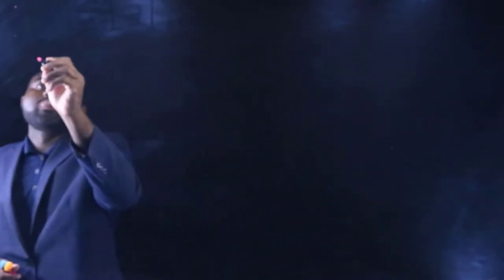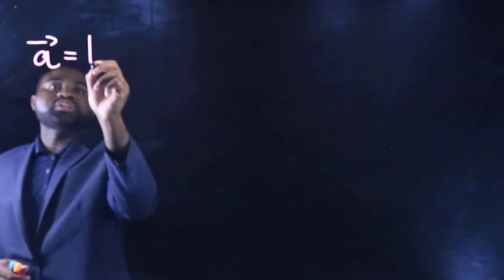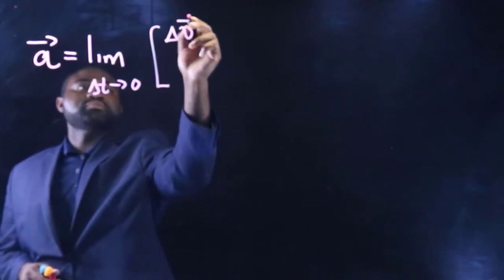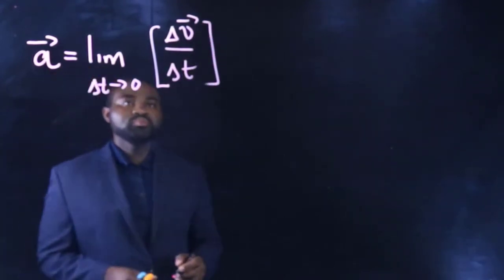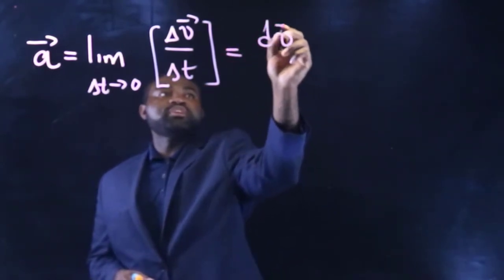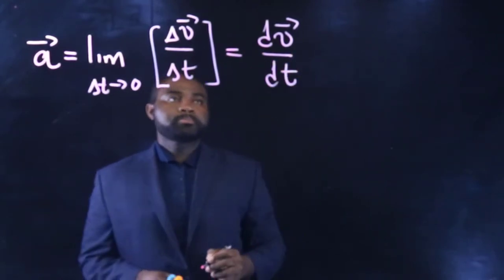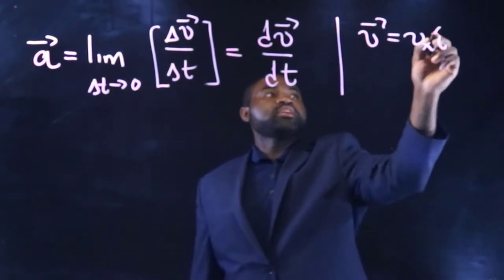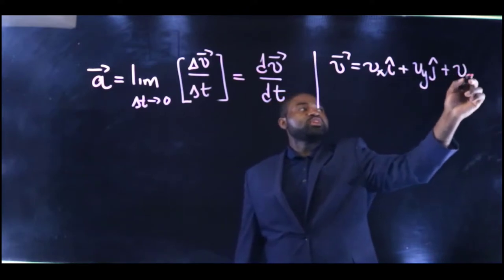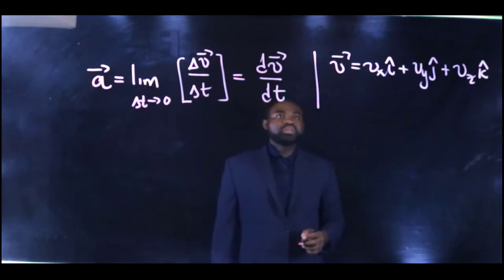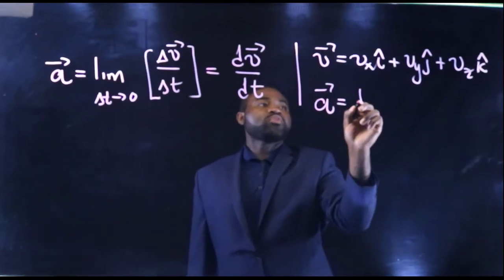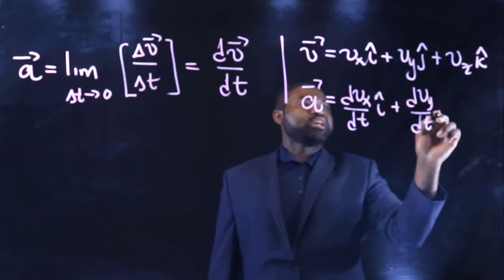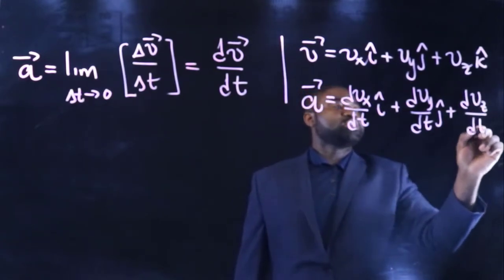The instantaneous acceleration is just the limiting value as the time interval approaches zero of the average acceleration. This means that a is just dv over dt. Now keep in mind that v is vx·i plus vy·j plus vz·k. This would mean that a is therefore dvx/dt·i plus dvy/dt·j plus dvz/dt·k.